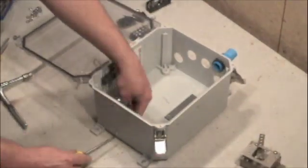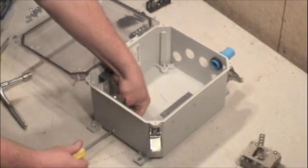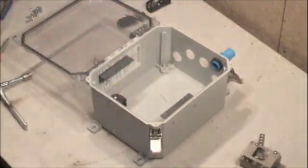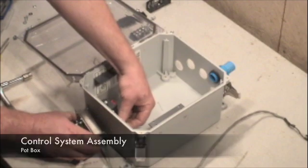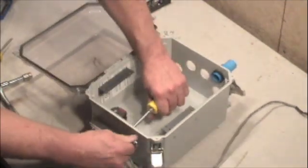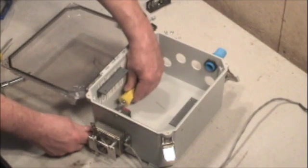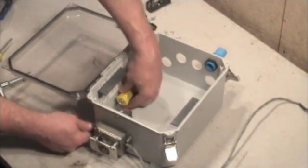The Curtis pot box assembles on the end of the enclosure on four pre-drilled locations. They'll be assembled and tightened with the supplied screws and nuts.